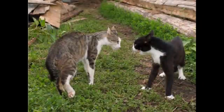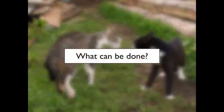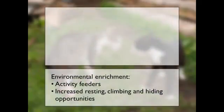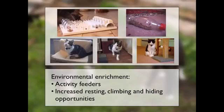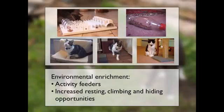The first treatment to consider is environmental enrichment. Activity feeders give cats free access to food on a slightly restricted basis so they have to work for it, preventing gorging and driving them toward a more normal pattern of eating 10 to 20 small meals per day. Because activity feeders require mental energy, they are more stimulating. We also need to increase the number of resting, climbing, and hiding opportunities so cats can stay away from each other, maintain independence, and operate as individuals without competition — thereby reducing tension within the household.